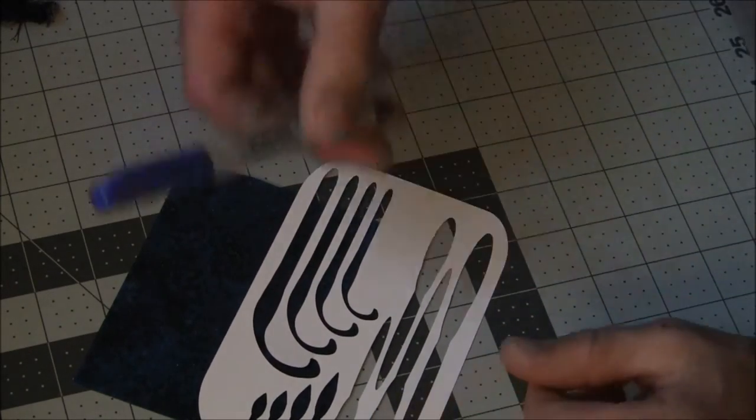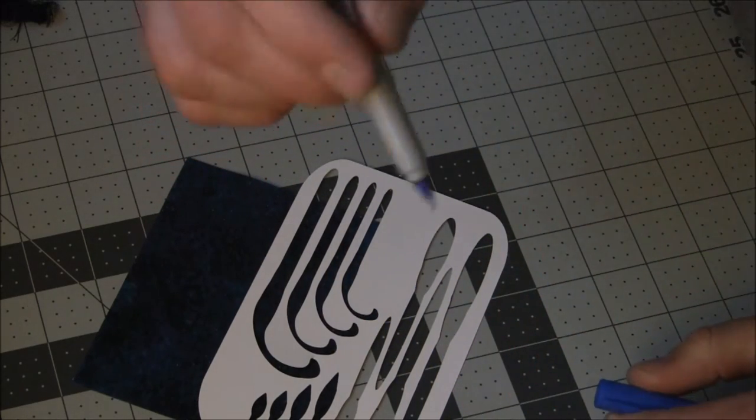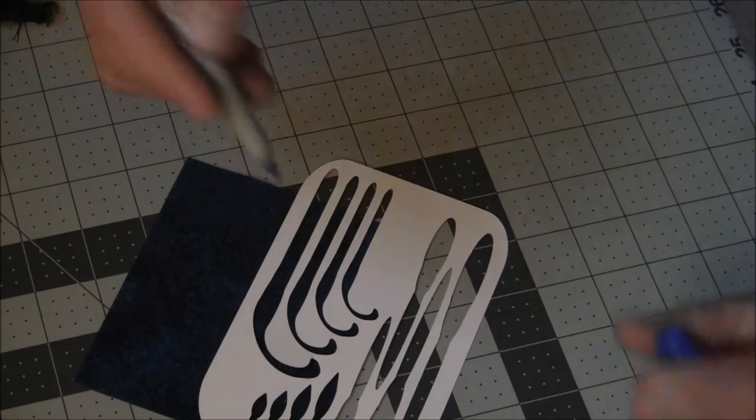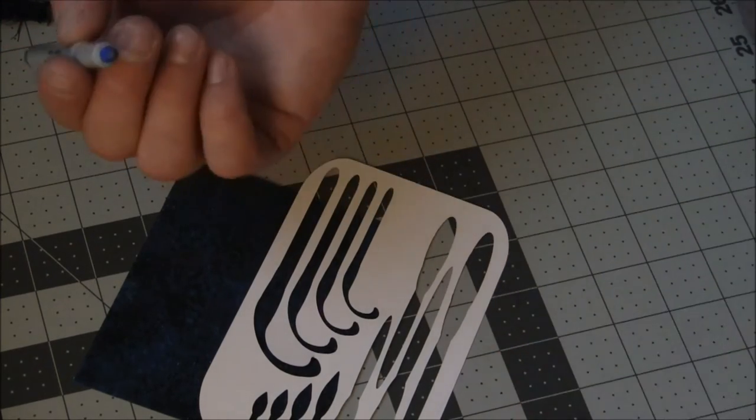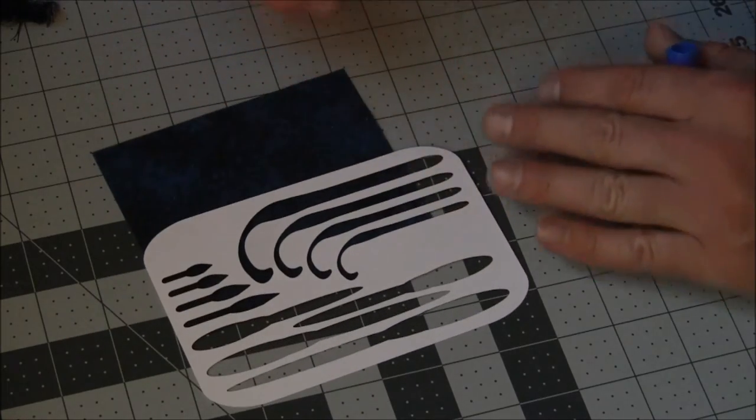Then I'm going to take a simple Sharpie fine tip marker and make little dashes all the way around, or you can just trace it—whatever you want to do. That way it gives you a guideline where to cut. First things first, trace it out.